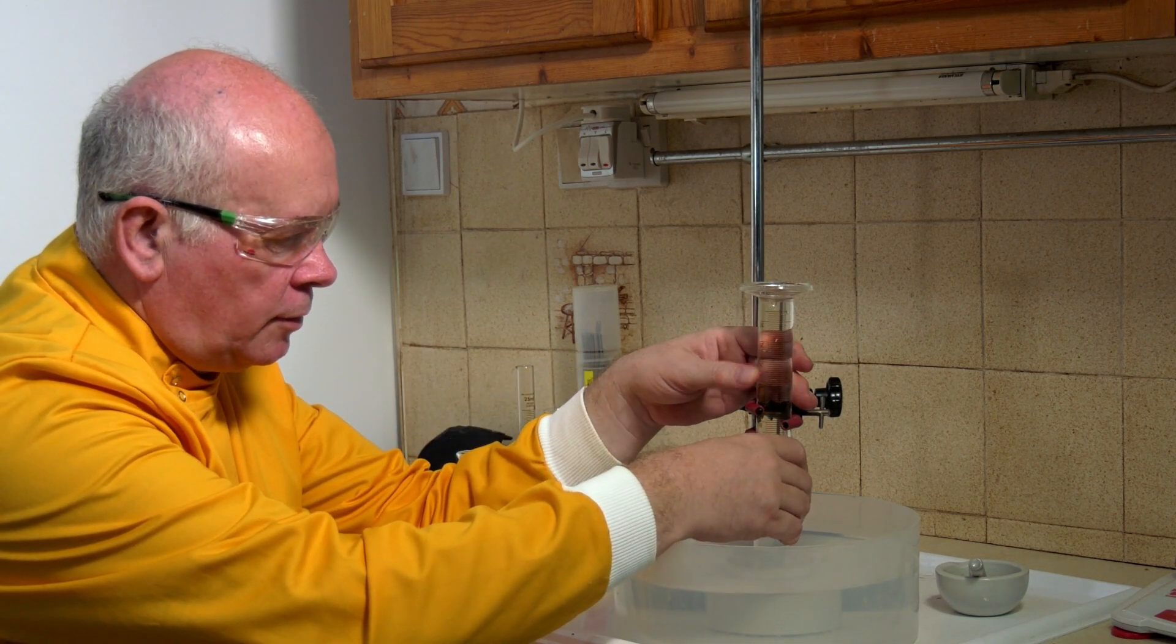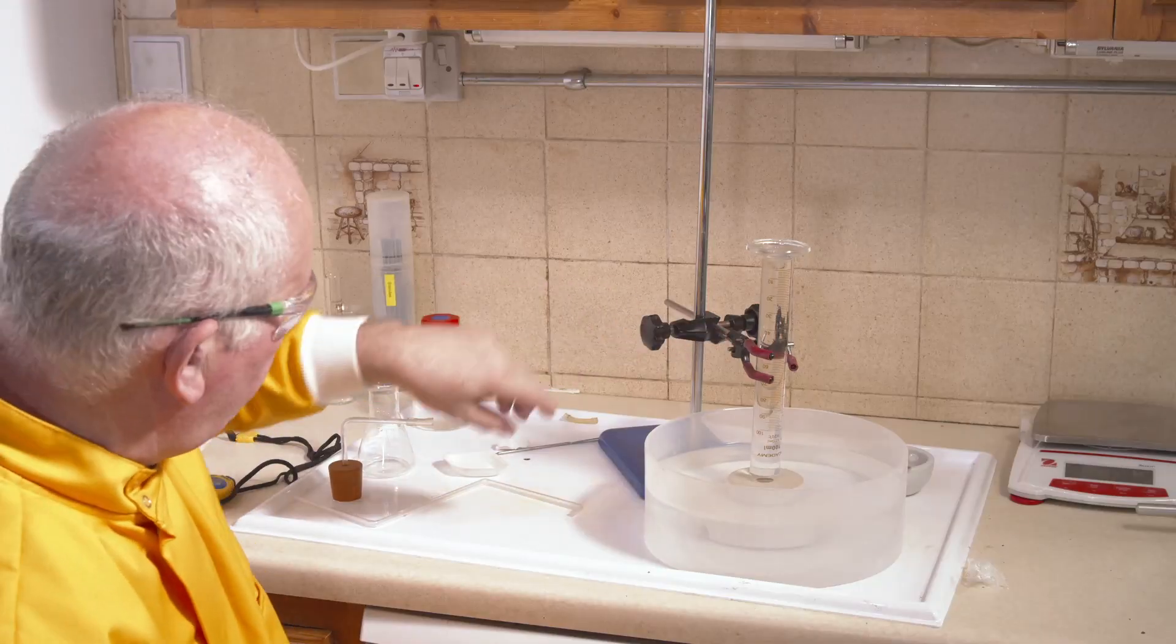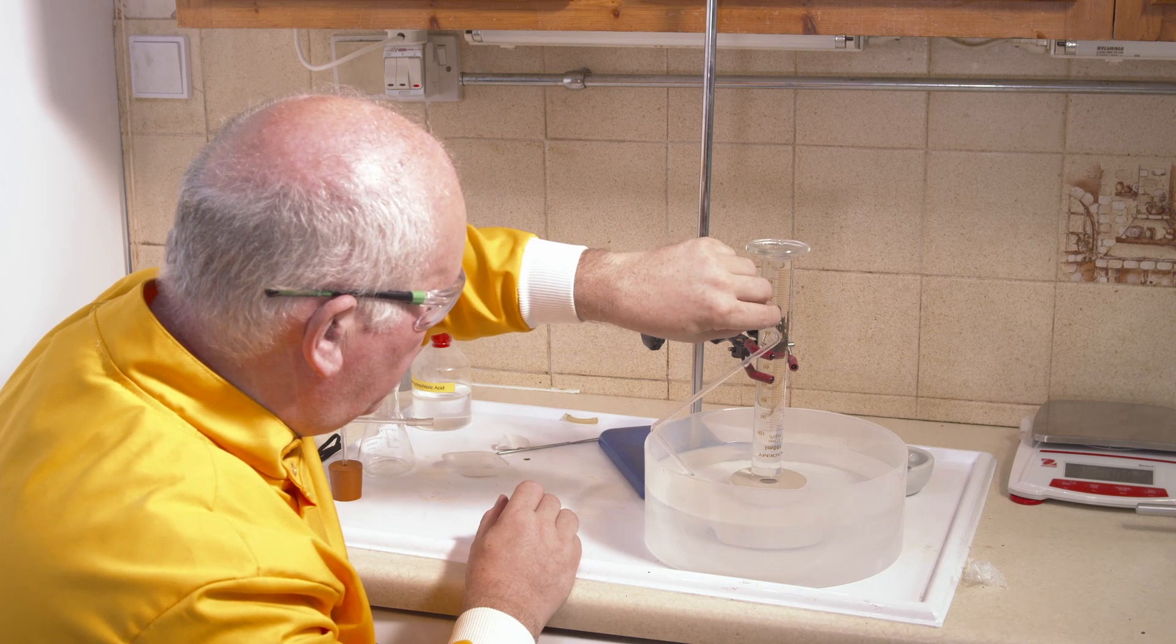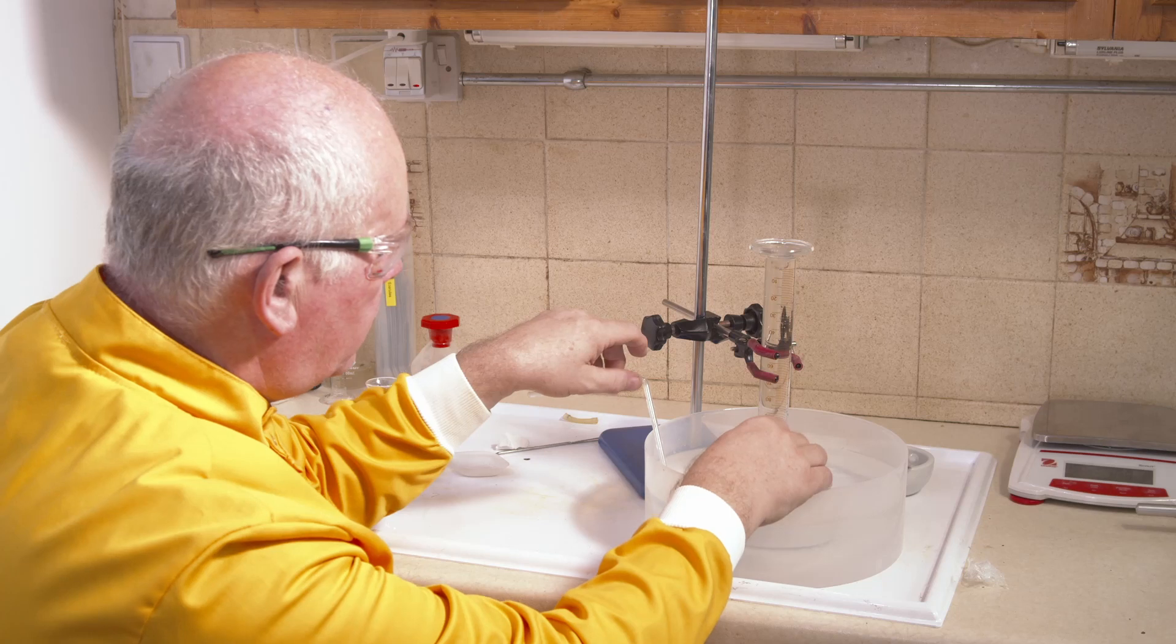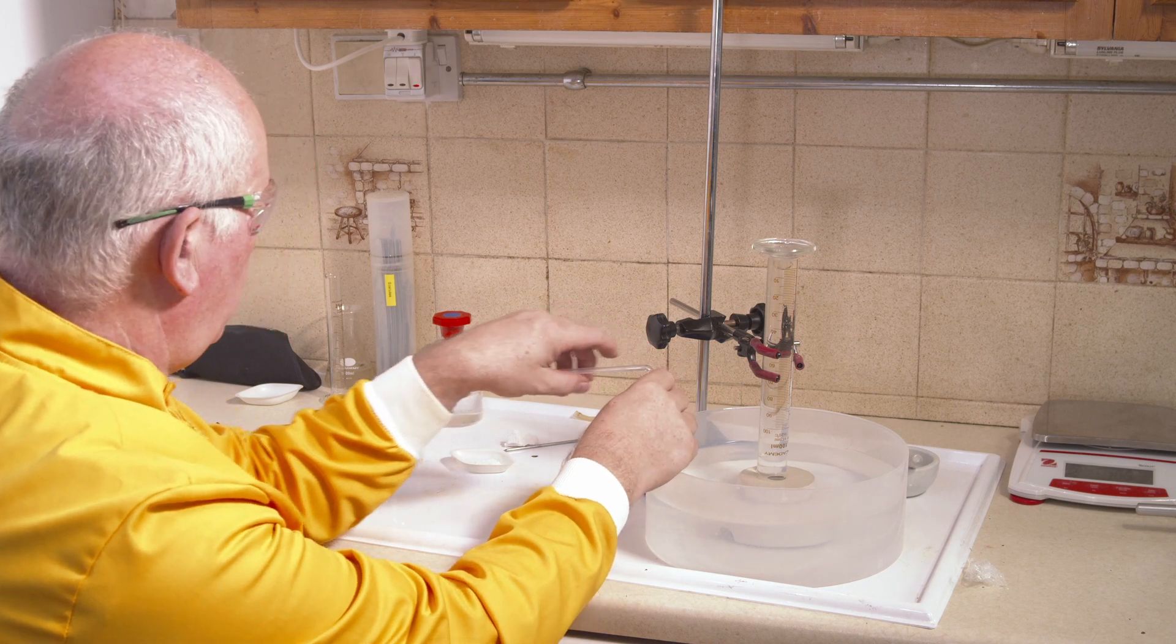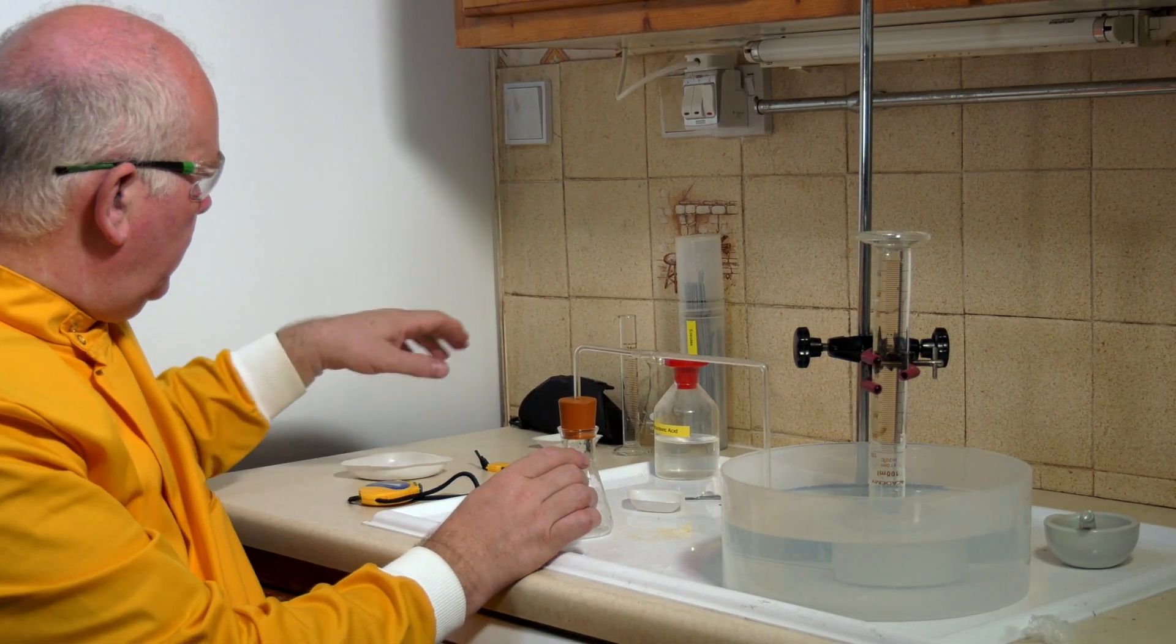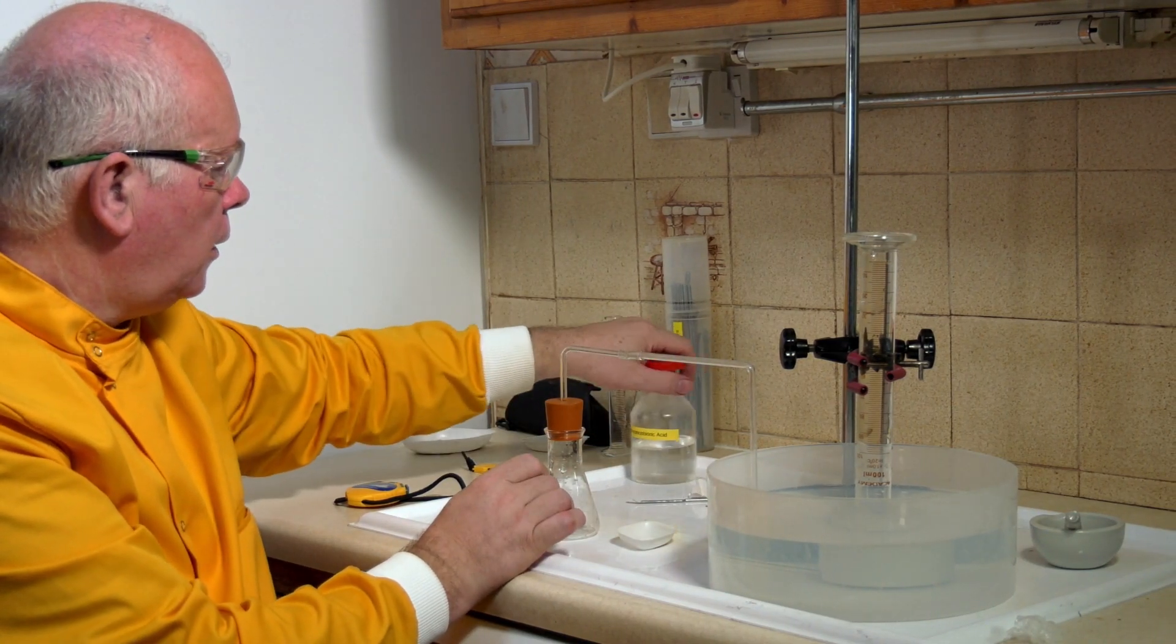I'm going to turn the measuring cylinder around so I can see the graduations on it. I've got a piece of glass that I've previously bent to go into the beehive shelf, and what I want to do is make sure that that little piece underneath is directly under the hole. Then we can connect this up. We're ready to go. All I need now is my powder of calcium carbonate.